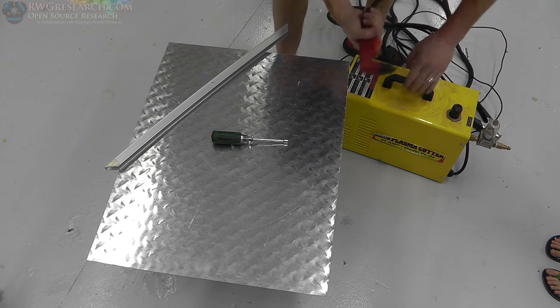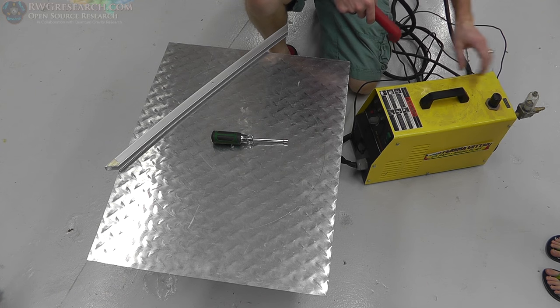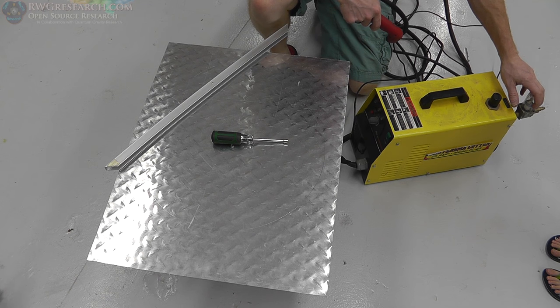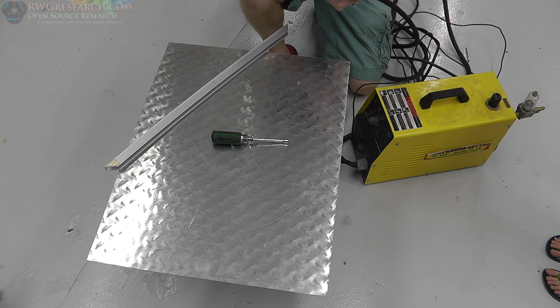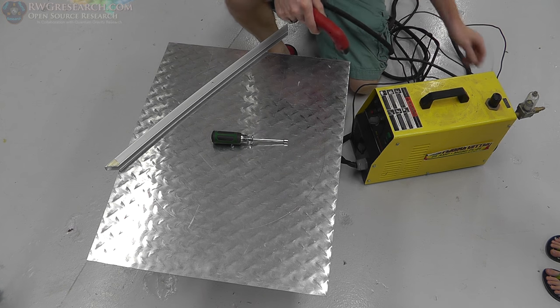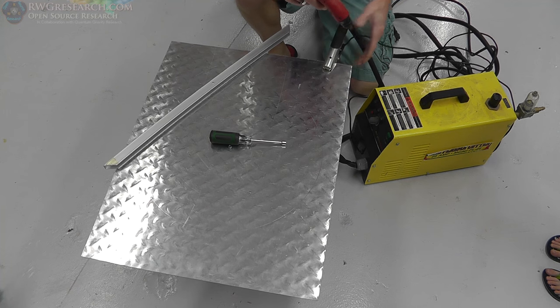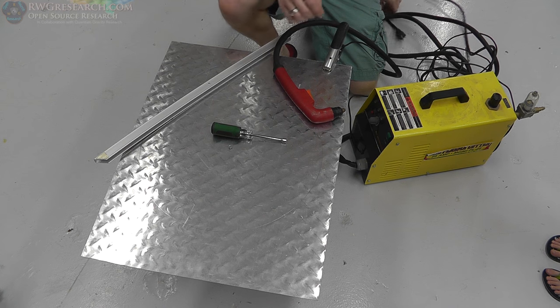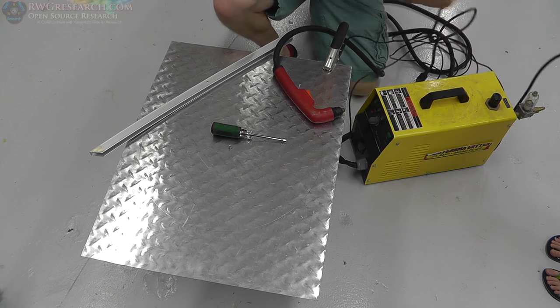This is a plasma cutter. So this is a Harbor Freight version. You put air into the back of this thing, it comes out the front in a plasma formation, a twirly hot plasma formation, and it basically cuts the metal. This is the ground lead, it has to be attached to it like this. And then we have to plug it in, of course.